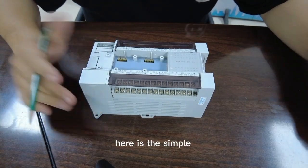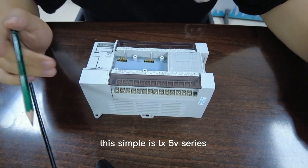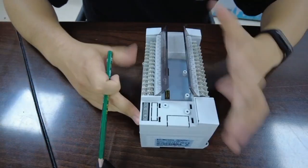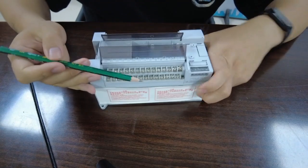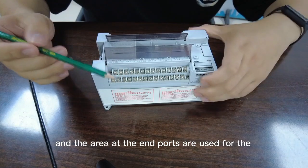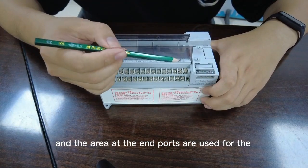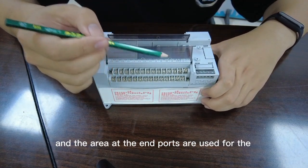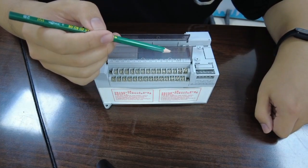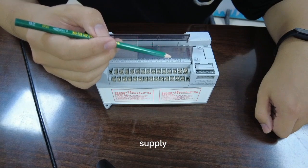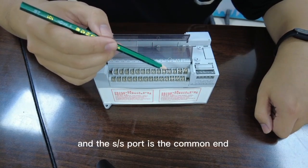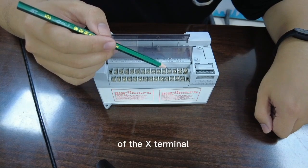Here is the sample. This sample is LX5V series. This arrow is the digital input part. The L and N ports are used for the 220V power supply, and the SS port is the common end of the X terminal.